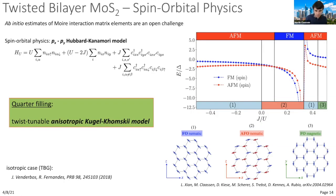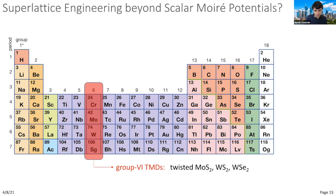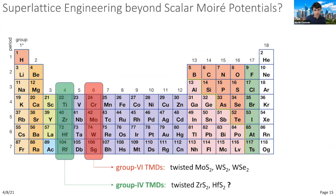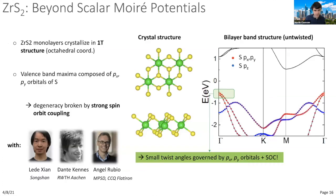Now, regarding spin-orbit coupling: all previous considerations regarded Group 6 TMDs—twisted MoS2, MoSe2, tungsten disulfide. One can ask about Group 4 TMDs such as twisted zirconium disulfide or hafnium disulfide, which are well characterized in monolayer and untwisted bilayer form. These have the important difference that while Group 6 TMDs naturally crystallize in the 2H phase with trigonal prismatic coordination, Group 4 TMDs can crystallize in the 1T phase with octahedral coordination, and spin-orbit coupling plays a central role.